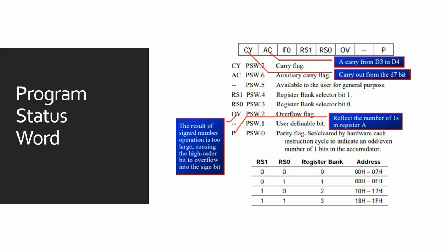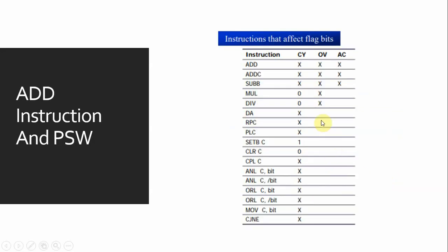Similarly, if RS1 is 0 and RS0 is 1, then register bank 1 will be selected and the address will be from 08h to 0Fh. These are the particular instructions that affect the flag bits, which we will discuss using an example.